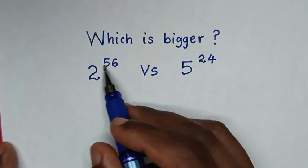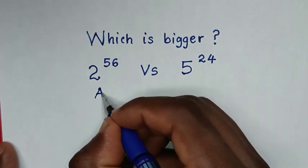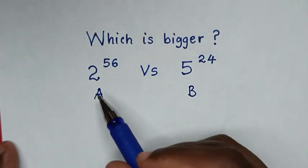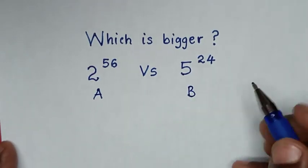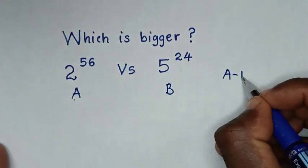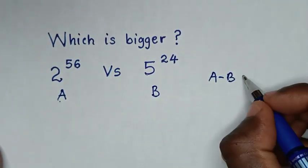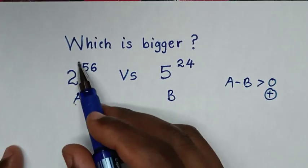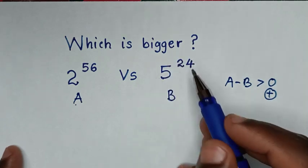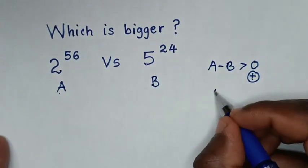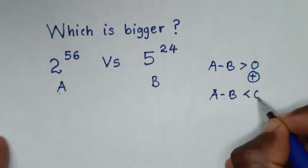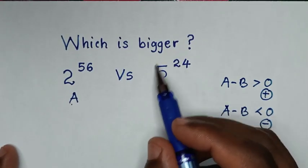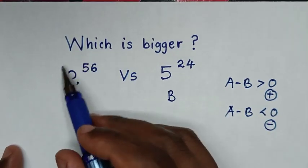From 2 power 56 we let this exponent as a and this exponent as b. Then we'll solve by finding the difference, that means a minus b. If a minus b is greater than 0, or a positive value, then the first exponent is greater. If a minus b is less than 0, or a negative value, then the second exponent is greater than the first.